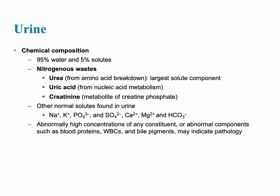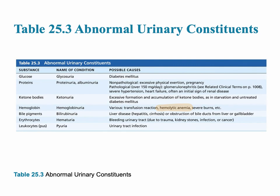Urine is very important — it should contain nitrogenous waste, but only in normal amounts, not excessive. Nitrogenous wastes include urea, uric acid, and creatinine, which is not the same as creatine (creatine is used in muscle metabolism). Abnormal substances possibly found in urine include glucose, proteins, and ketone bodies. Glucose should not be in the urine.